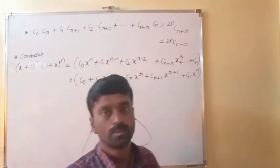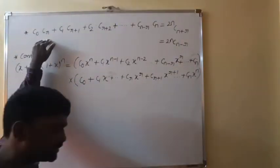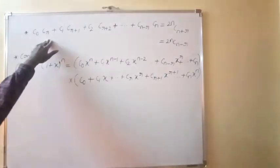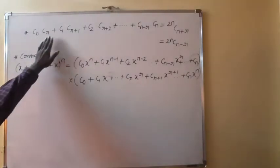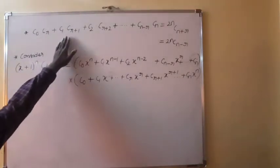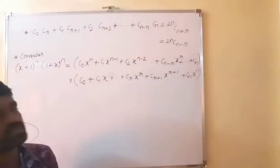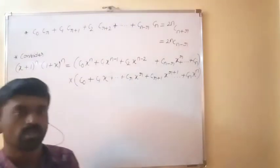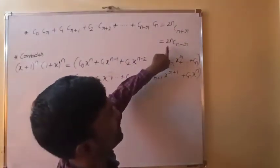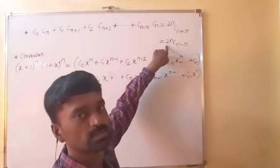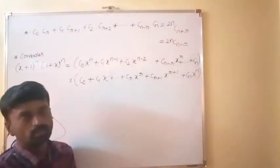The result is C0·CR, where CR is NCR. So you have to read it as NC0·NCR. The second term is NC1·NCR+1, and so on, CN-R·CN. Its value is 2NCN+R, which is same as 2NCN-R, using NCR = NCN-R. So 2NCN+R is same as 2NC(2N-(N+R)) = 2NCN-R.